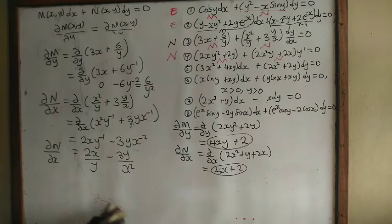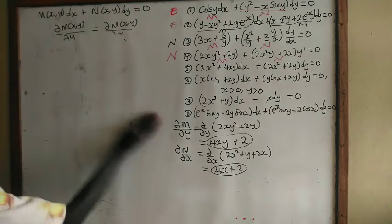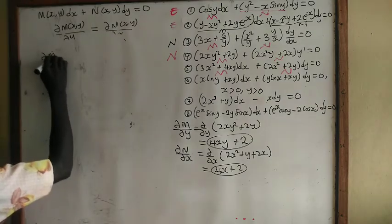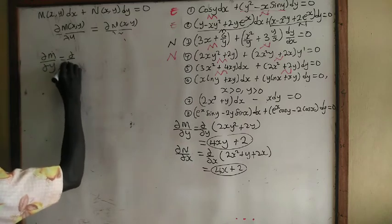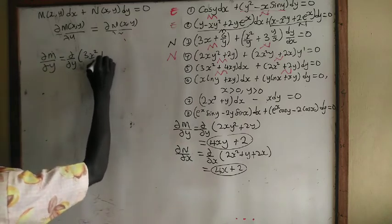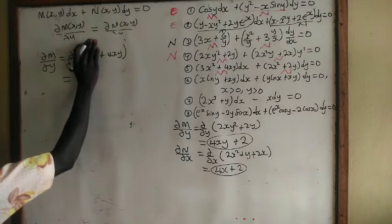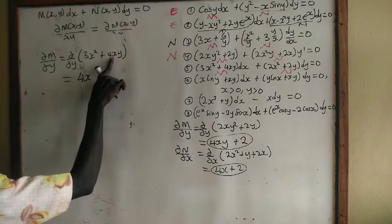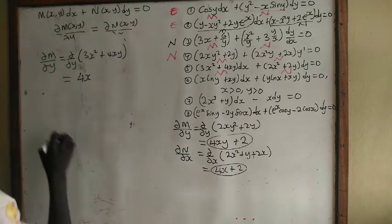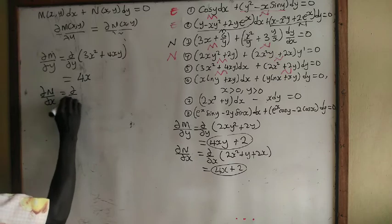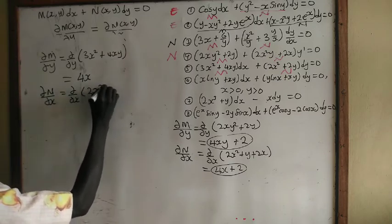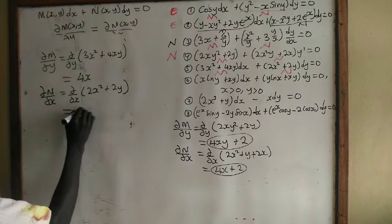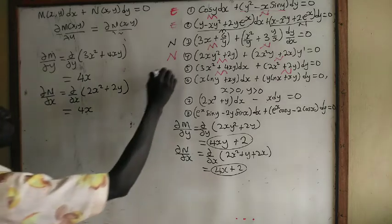Let us move to number 5. For number 5, this is our M and this is our N. Del M on del y equals del/del y of 3x squared plus 4xy. Differentiating with respect to y: 3x squared is a constant giving zero, and differentiating 4xy gives 4x. Del N on del x equals del/del x of 2x squared plus 2y. Differentiating with respect to x: 2y is a constant giving zero, and differentiating 2x squared gives 4x. Since 4x equals 4x, this equation is exact.